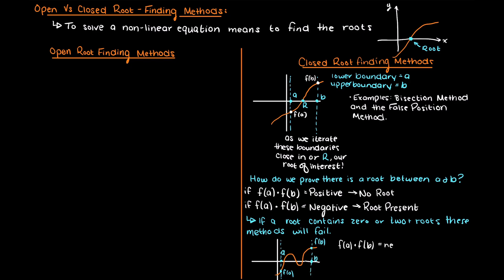With multiple roots we cannot perform our root present test since we can have a function that still receives a negative product, but our two roots present will cause problems with the algorithms that we will cover in coming videos.